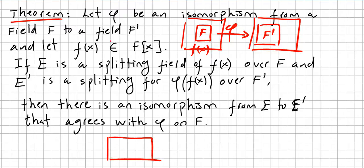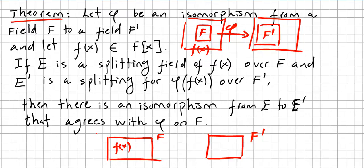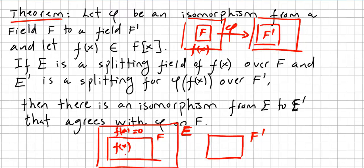We have phi as an isomorphism from a field F to F prime. F of X is in the ring of polynomials, and E is a splitting field of F of X, so F of X splits here in E. There is some element A in F adjoin A where F of A equals zero.